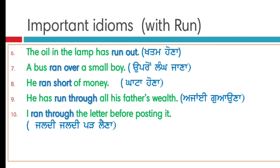Run through means ajayin ghoona (to squander/waste). He has run through all his father's wealth. Usnei apne pita di sari daulat ajayin ghoa diti hai. Note: ithe run through di third form use hoi hai — run, ran, run. So has/have ke saath third form use kiti hai. Tusi run, ran, run use karke sentences bana sakde ho kisye bhi tense vich.